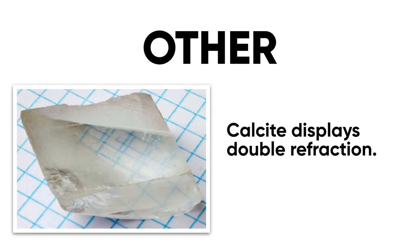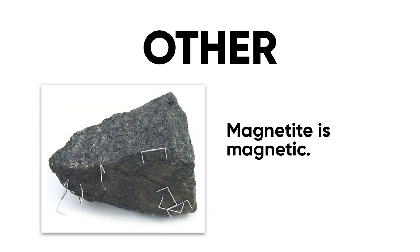The mineral calcite also displays double refraction, which means when you look through it, it refracts the light so that you're seeing double of whatever is on the other side. Additionally, we get samples like magnetite, which is magnetic — so that's a good way to test it.